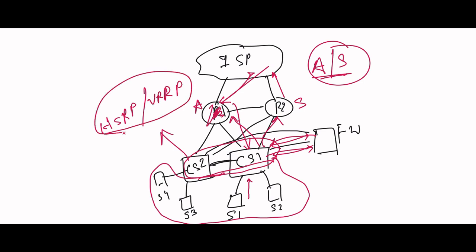At the switch level, CS1 and CS2 use two protocols: HSRP or VRRP. For more detail on CCNA/CCNP topics, you can reach out. The firewall handles traffic inspection in this advanced architecture.